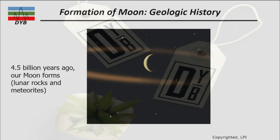Let's look at the formation of the moon. As mentioned, there are different theories about the formation of the moon, which we have explained in the previous lecture — you can refer to that. It is stated that 4.5 billion years ago our moon was formed, and the lunar rocks and meteorites were all formed together, meaning the age of the moon is 4.5 billion years.